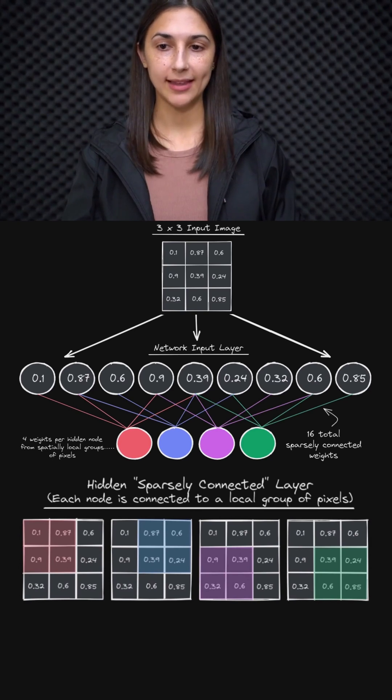Remember, with this example, we talked about passing groups of pixels from the input to given nodes in the first hidden layer, rather than passing every single input value to every single node in the hidden layer.